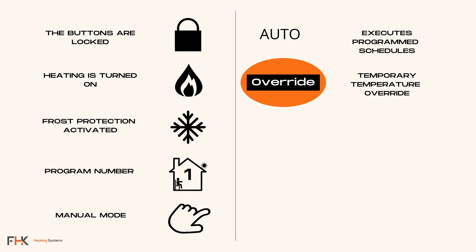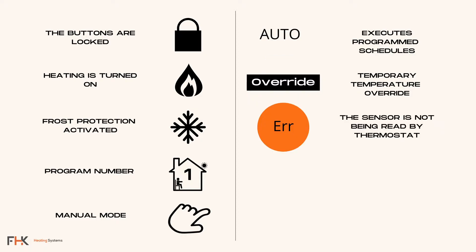The override symbol means the unit is temporarily operating at the temperature you have selected and will automatically go back to schedule when the next program switch on or switch off time occurs. The err symbol means the floor sensor has an error and is faulty or not connected properly.